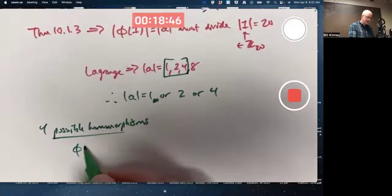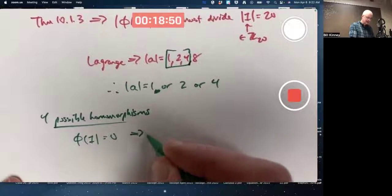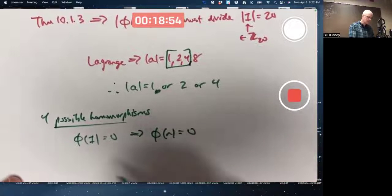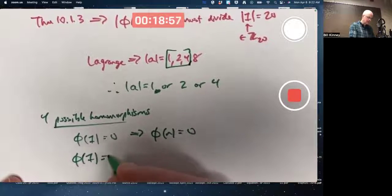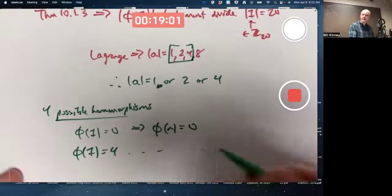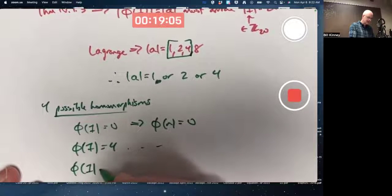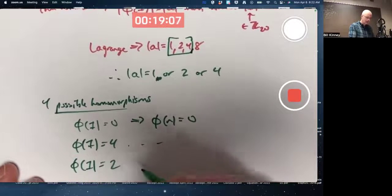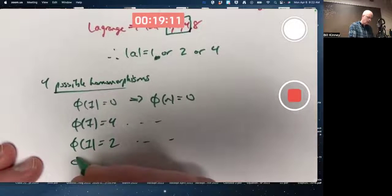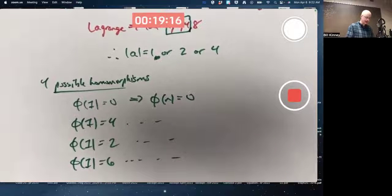Based on mapping one to zero, which means in general, it maps everything to zero or one to four, and you could figure out from there what everything else gets mapped to, or one gets mapped to two and you could figure out what everything else gets mapped to, or one gets mapped to six and you could figure out what everything else gets mapped to.